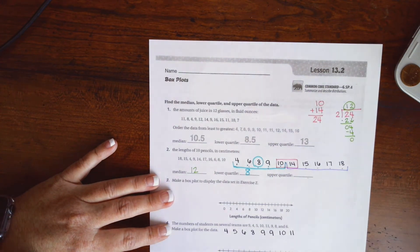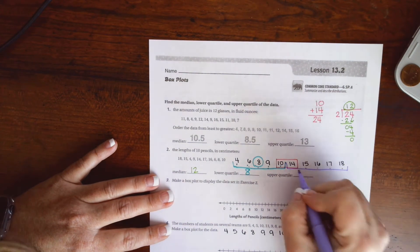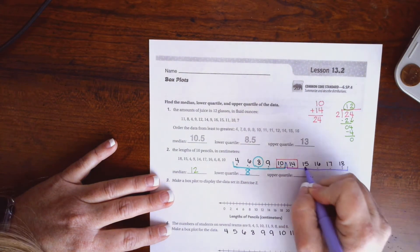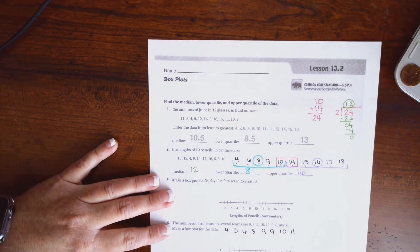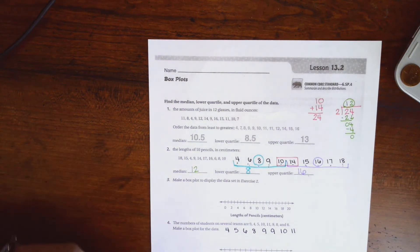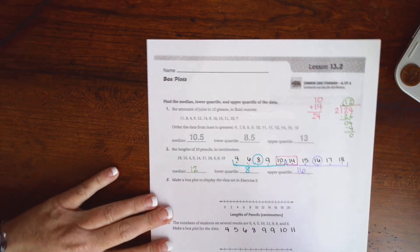Now I'm going to do the upper quartile. Dot, dot, dot, dot, and then I get 16. Super easy, guys. Don't make it harder than it's got to be.